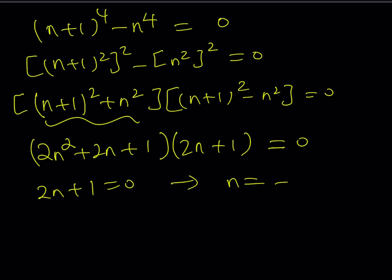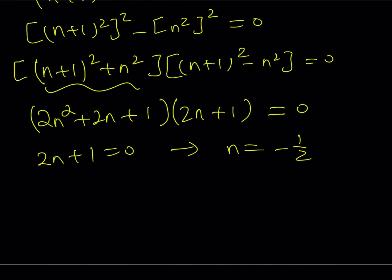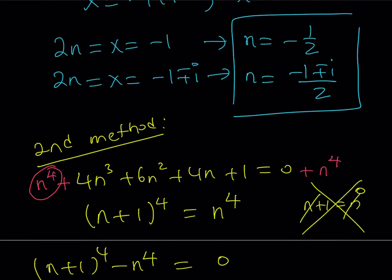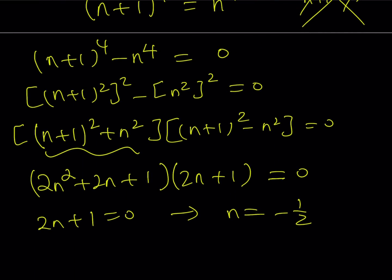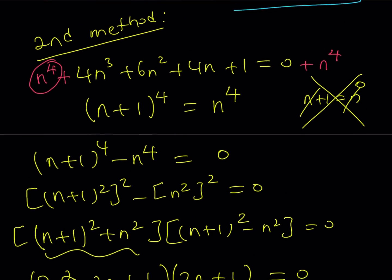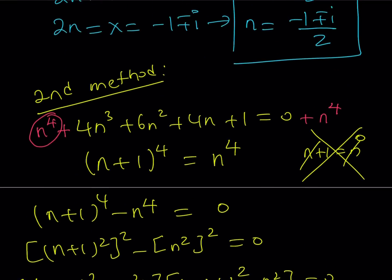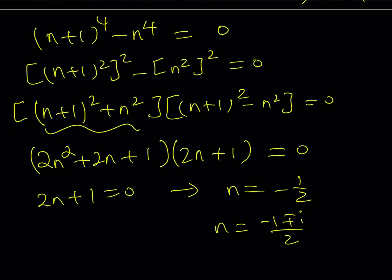If you set 2n + 1 = 0, you get n = -1/2, which is what we found earlier. And from the other equation, you're going to find the same n values: n = (-1 ± i)/2 are the complex solutions.